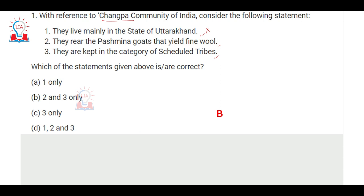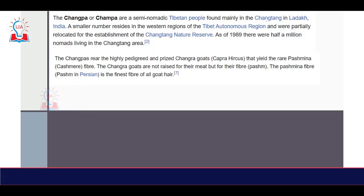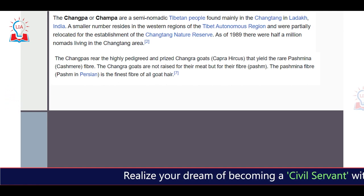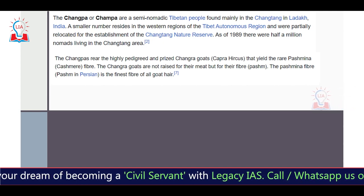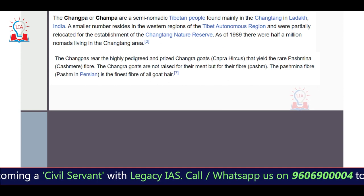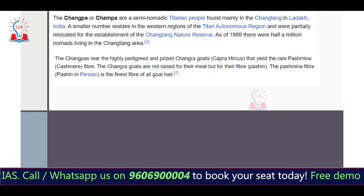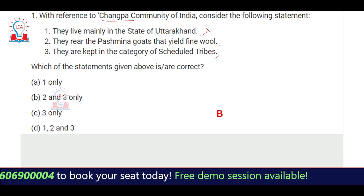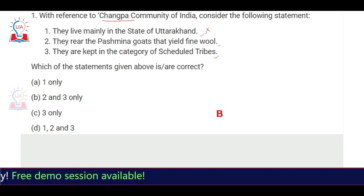The first statement is incorrect because the Changpa community are semi-nomadic Tibetan people found mainly in the Changtang plateau, which is part of the Ladakh region of India. A small number also reside in the Tibetan Autonomous Region, and as of 1989 there are more than half a million nomads living in the Changtang area. They mainly depend on the yield of rare Pashmina or cashmere fiber. The second statement is correct. The third statement — they are in the category of scheduled tribes — is also correct, but they live in Ladakh, not Uttarakhand.